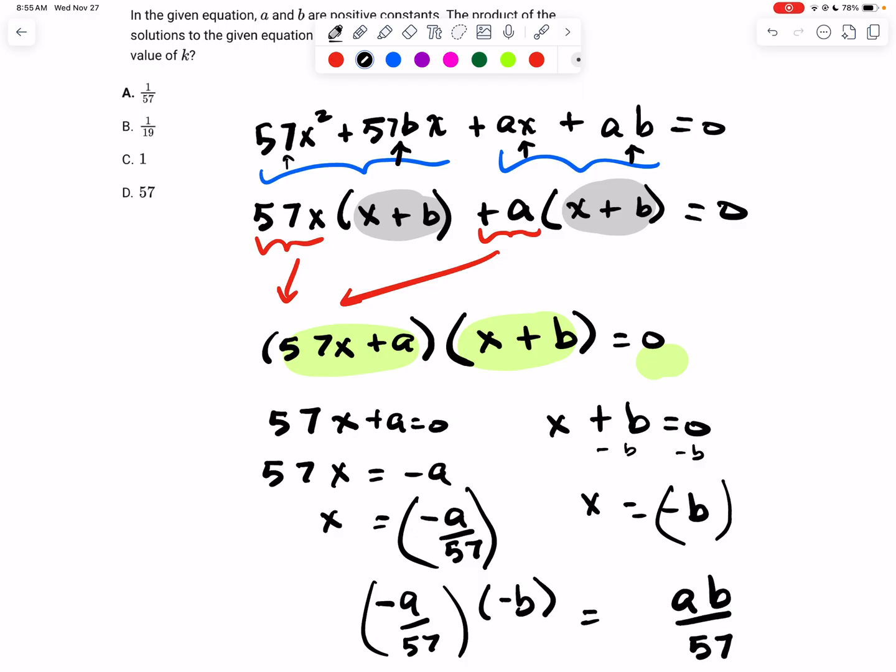Now that is the same as saying 1 over 57 times ab, which now we have our k because it's being multiplied by ab. So that means our k value is 1 over 57, and we can pick answer choice A, and we are done.